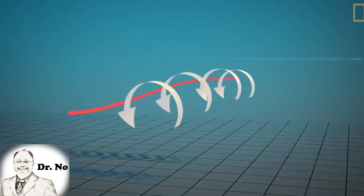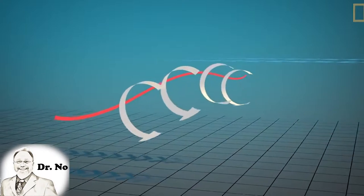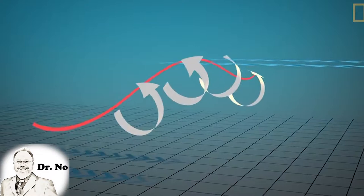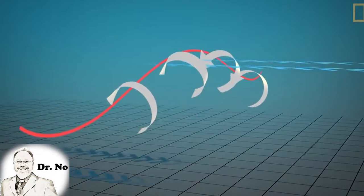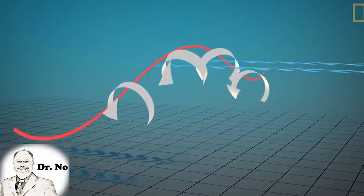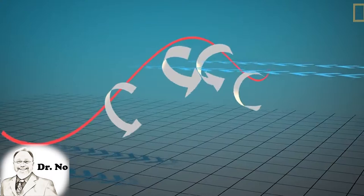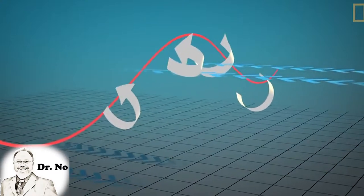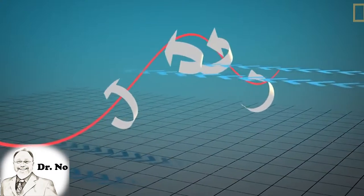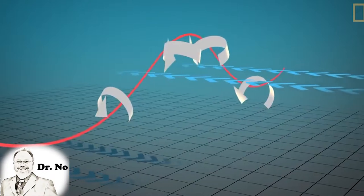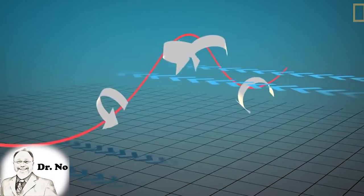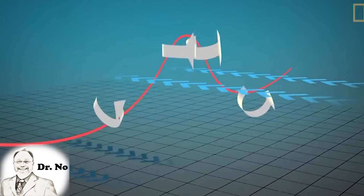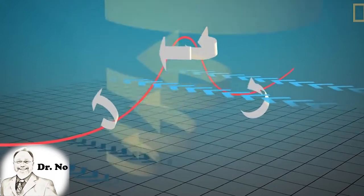This happens the same way that a figure skater spins faster when the arms are drawn in rather than when the arms are outstretched. This is called conservation of angular momentum. The rotating air moves horizontally across the land and can be tilted vertically by the force of the rising, rotating air. That allows a tornado to form.